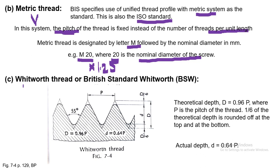Another type of thread is Whitworth thread or British Standard Whitworth (BSW). The flank angle is 55 degrees — not 60 degrees — and rounding is done on both sides. The actual depth d equals 0.64P, where P is the pitch. The rounding is the same on both crest and root. These dimensions allow drawing of the BSW thread.